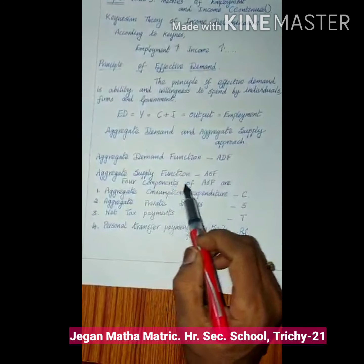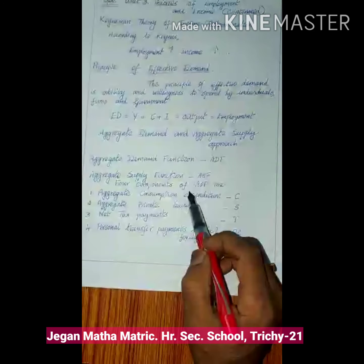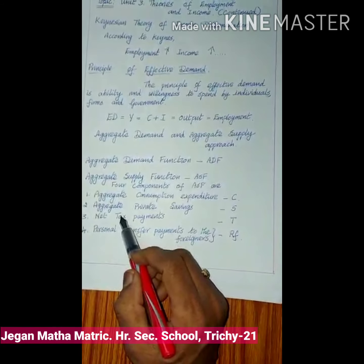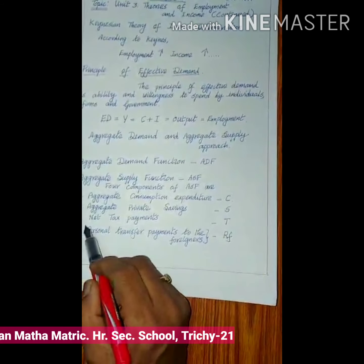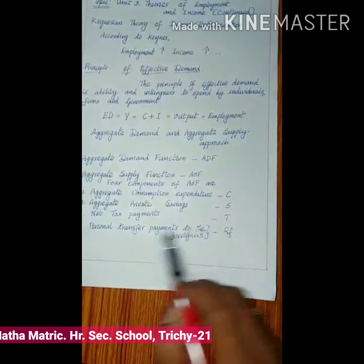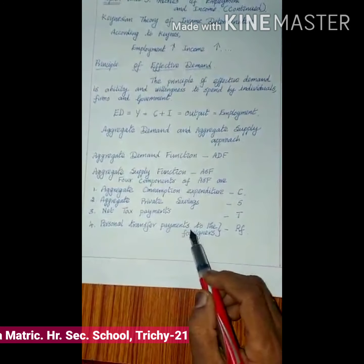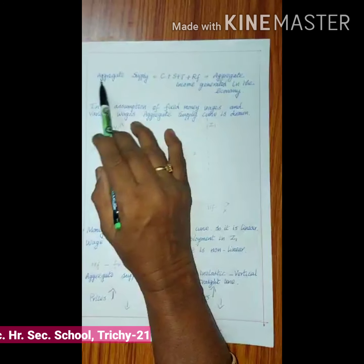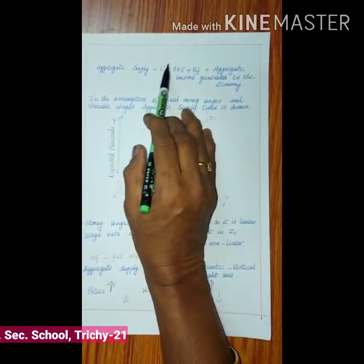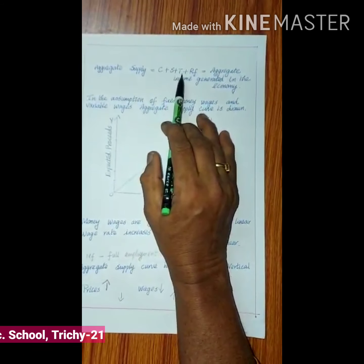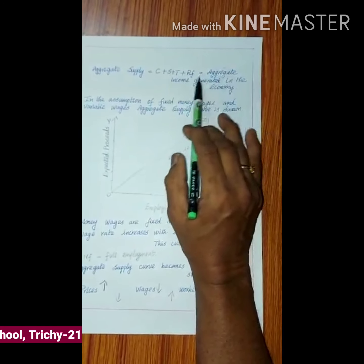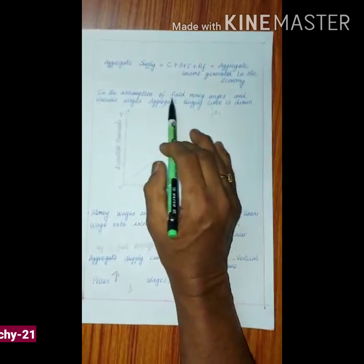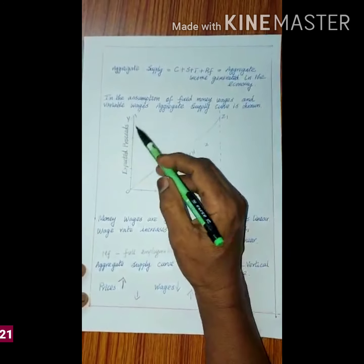Aggregate supply function consists of four components: aggregate consumption expenditure (C), aggregate private savings (S), net tax payments (T), and personal transfer payments to foreigners (RF). So aggregate supply equals C plus S plus T plus RF, which equals aggregate income generated in the economy.